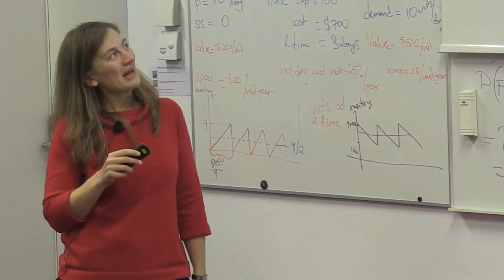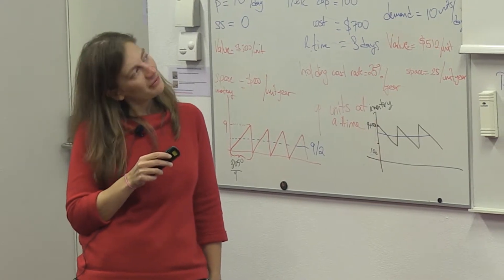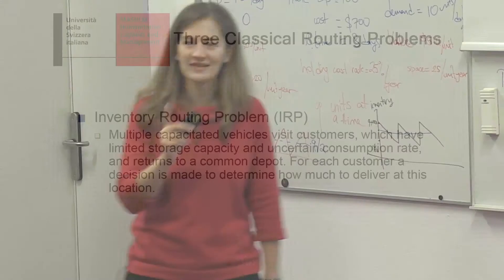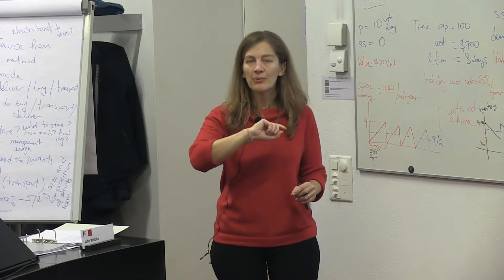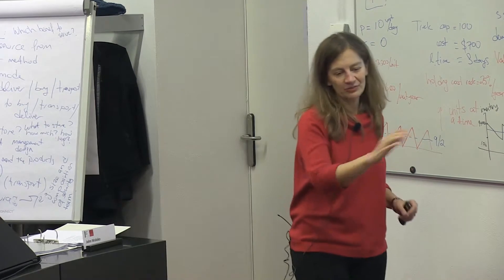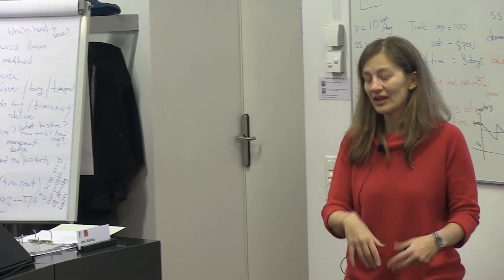The last one takes this problem and adds the issue of inventory. This means that I am not only deciding on which truck should go to which customers, but I'm also deciding on when I actually come to you and stop at you to deliver something, and how much to deliver.